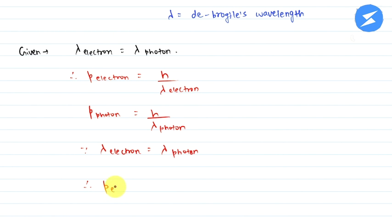Therefore, the momentum of electron equals the momentum of photon. The momentum is the same.